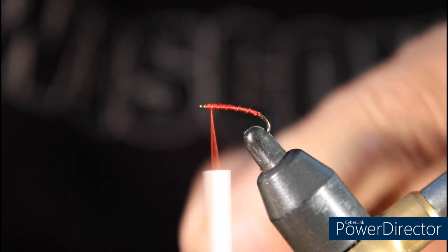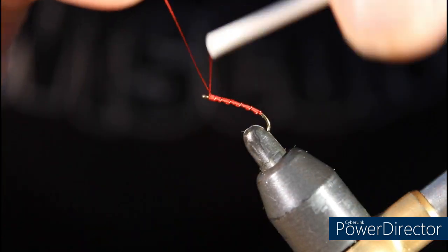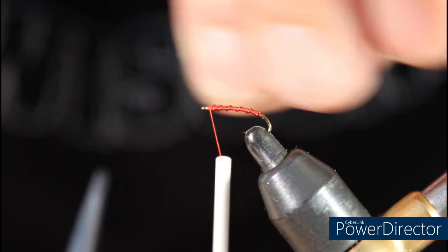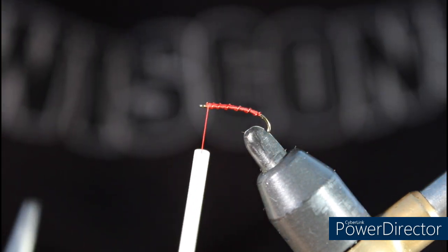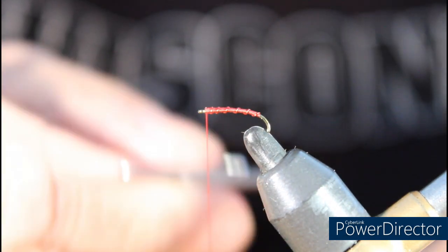Once we get to the eye, we're going to tie it off with two turns and we will helicopter it off. At this point we can whip finish the fly.